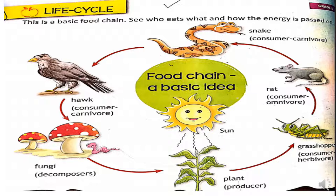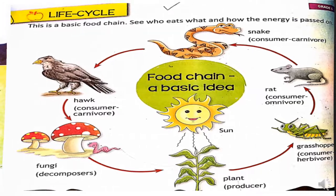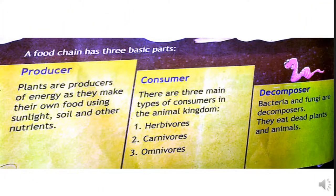Students, this is the full life cycle — the full circle of life and energy. I hope you all understand. Now, a food chain has three basic parts: the first is producer, second is consumer, and the third is decomposer. The food chain begins with a producer and ends with a decomposer.